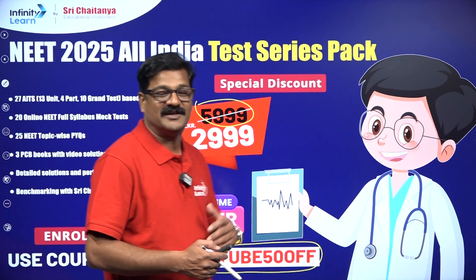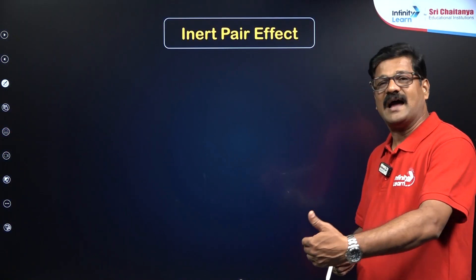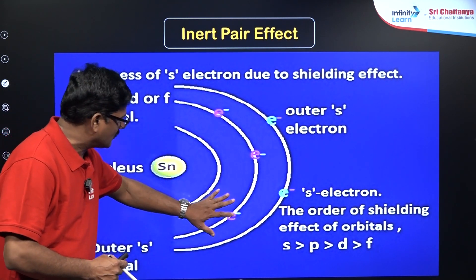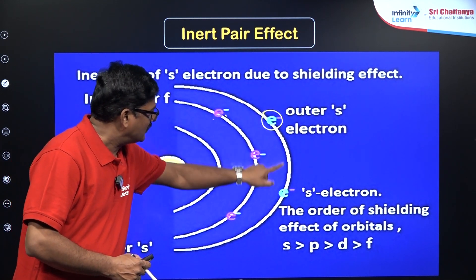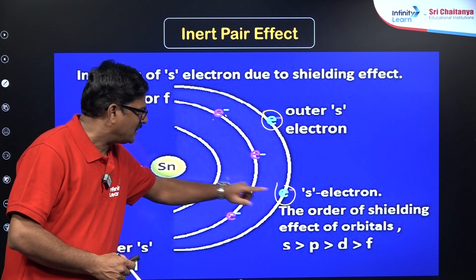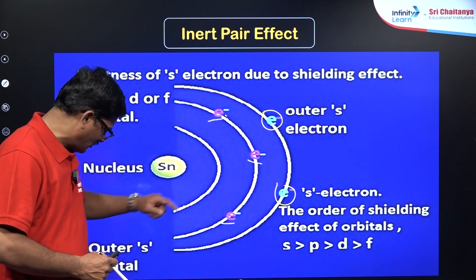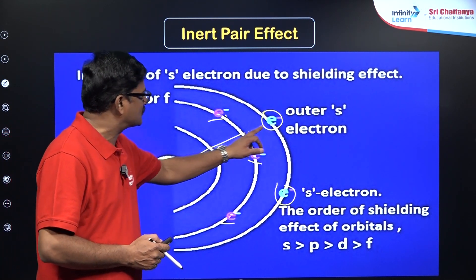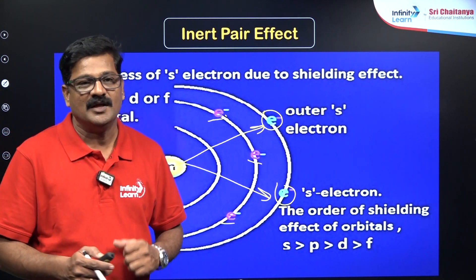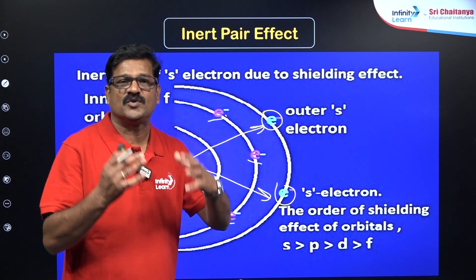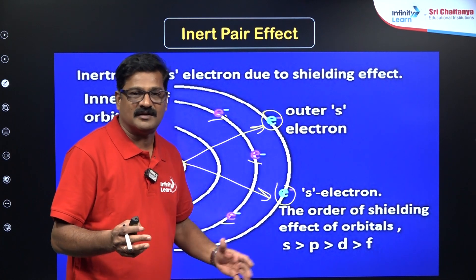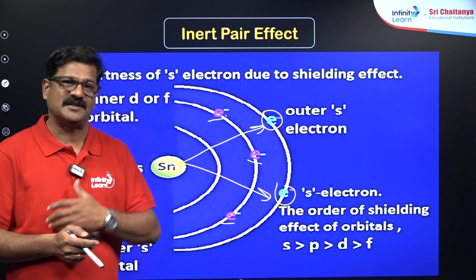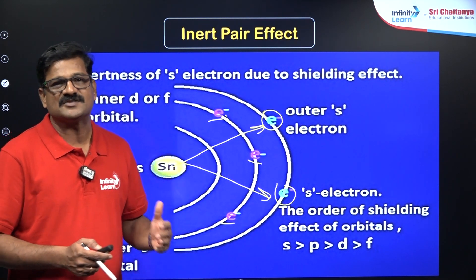Getting into the details of the inert pair effect: you can see this diagram — this is the nucleus of tin, the core electrons, and the outermost outer electron. There is a pair of electrons, and inside the core electrons they cause a poor screening effect. Due to this poor screening effect, the nucleus holds this outermost pair of electrons very tightly. Therefore, this pair of electrons becomes unreactive — they do not want to unpair to participate in bond formation, so their oxidation state and properties come out differently. This effect is called the inert pair effect.